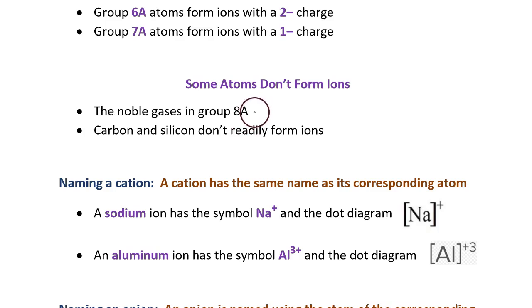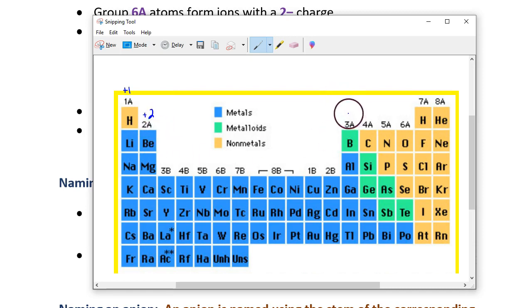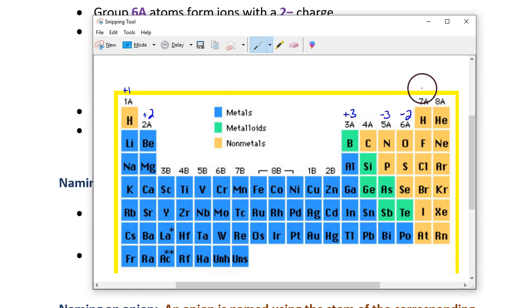Here's the periodic table again. You have one like this in the back of your book, and I encourage you to write the ion charges above each column with your pencil. For group 1A, indicate ions have a positive 1 charge. Group 2A, positive 2. Group 3A, positive 3. Don't put any charge above group 4A since carbon and silicon don't readily form ions. Group 5A creates negative 3 ions, group 6A negative 2, and group 7A negative 1. Don't put any charge above the noble gases.